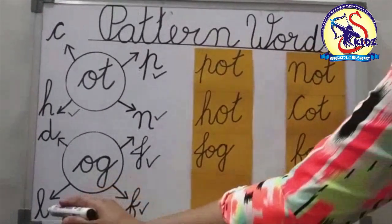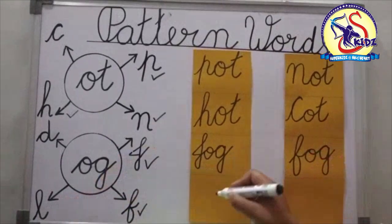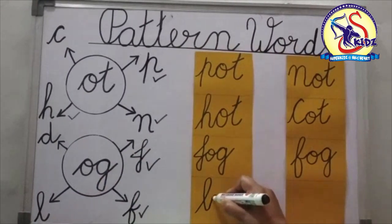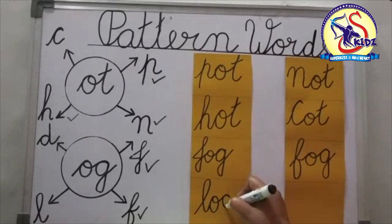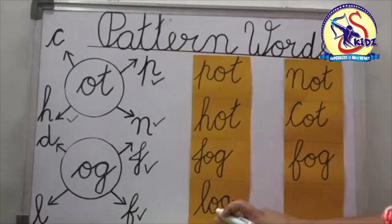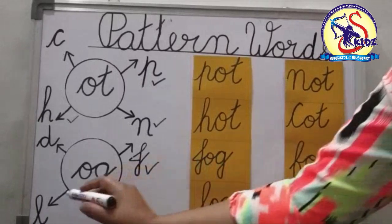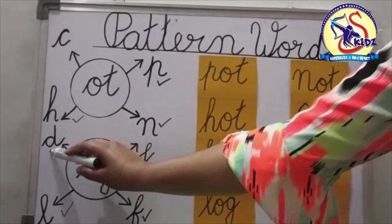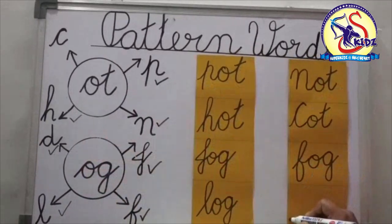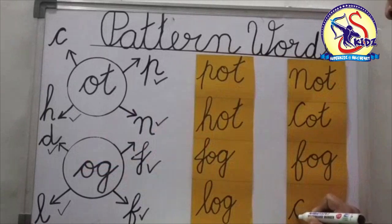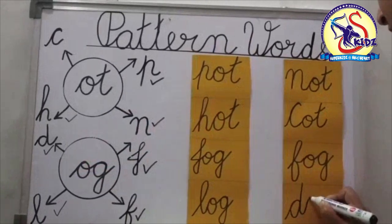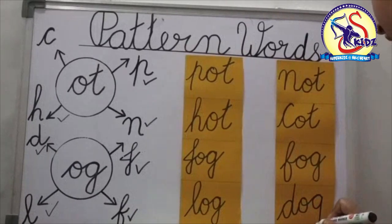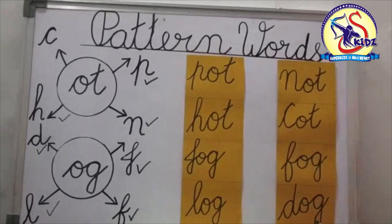Now see the next letter: L. And our pattern is O-G. Now we will get the word L-O-G, log. Now kids see our next letter: D. First of all we will write the D, then we will write our pattern O-G. Now we will get the word D-O-G, dog.